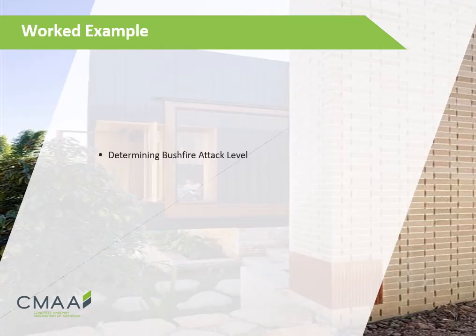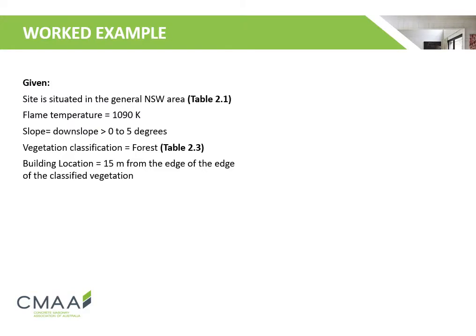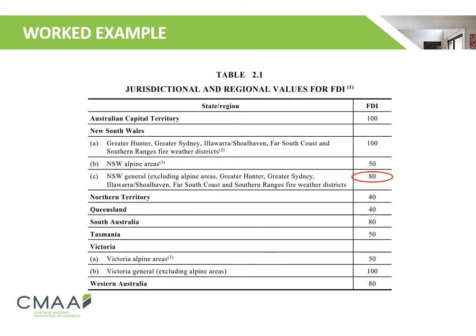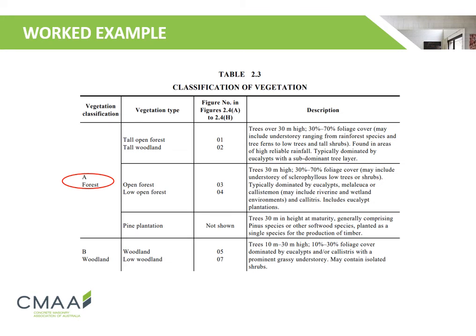We will now go through a worked example to determine the bushfire attack level. The site is situated in the general NSW area, with an effective slope of land under the classified vegetation of 0 to 5 degrees downslope. The vegetation classification is forest, and the building is located 15 metres from the edge of the classified vegetation. Using Table 2.1, we find that the fire danger index for the general NSW area is 80. Using Table 2.3, we are able to identify the vegetation classification.